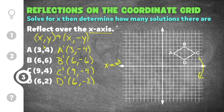Now that I have the coordinates for the new shape after the reflection, I can graph them. A prime is (3, negative 4), B prime is (6, negative 6), C prime is (9, negative 4), and D prime is (6, negative 2). I'm going to connect the vertices. You can see that this figure has been reflected across the x-axis and it's a mirror image of the original.